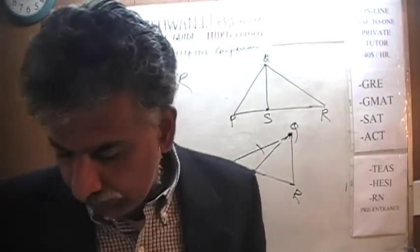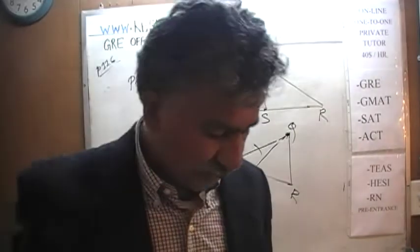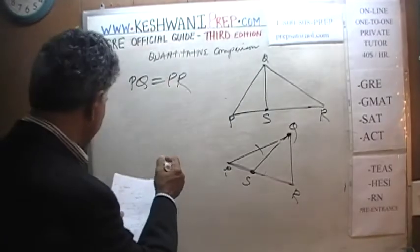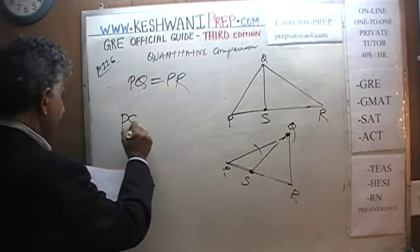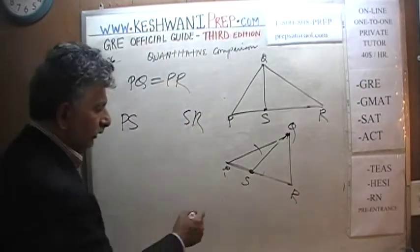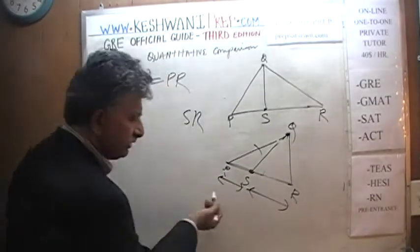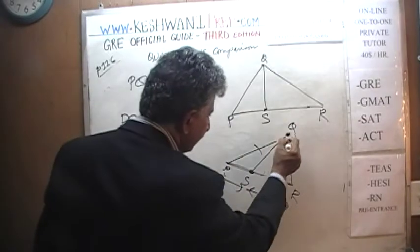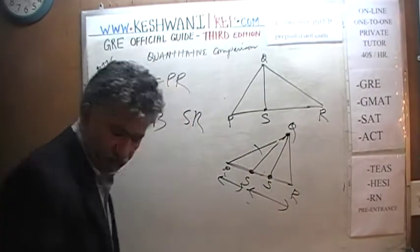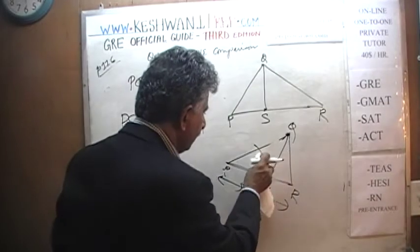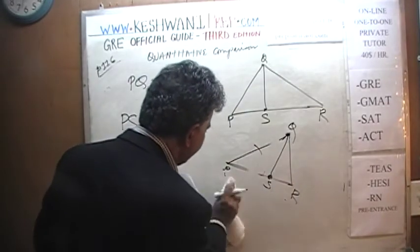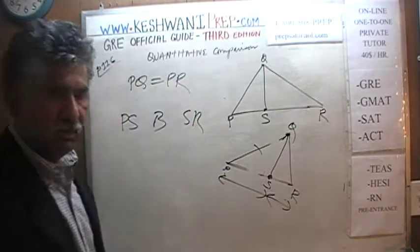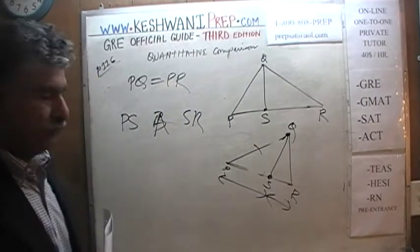We cannot go by the picture. We cannot compare the distance PS to SR unless we are told the exact location of point S. If S is very close to P, then PS is very little and SR is very large — the answer would be B. But if point S is much farther along, the distance from P to S increases and S to R shrinks — the answer would be A. We do not know. The answer is D.